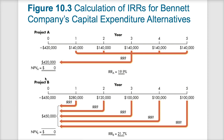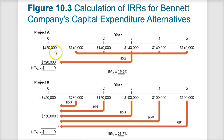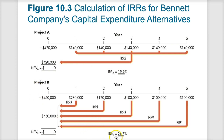Going back to the same timeline used earlier, but now for internal rate of return — the same two projects A and B with initial investments of $420,000 and $450,000. We find the internal rate of return of these cash flows that brings the net present value to zero. For Project A, the rate is 19.9% — that rate discounts the cash flows down to $420,000, giving a net present value of zero. For Project B, the rate of return is actually higher at 21.7% — we discount a little higher to make those cash flows equal $450,000 with zero net present value.